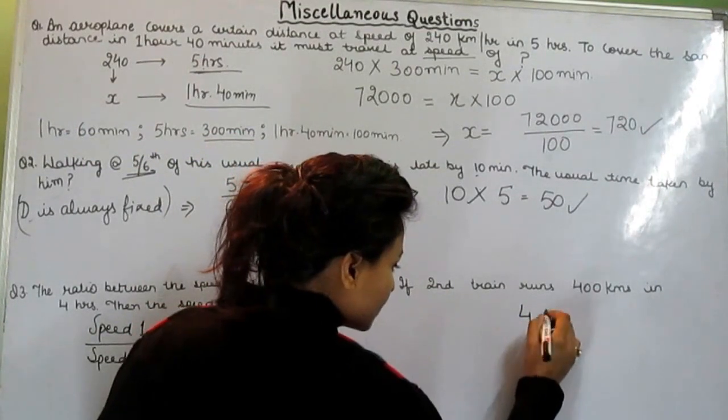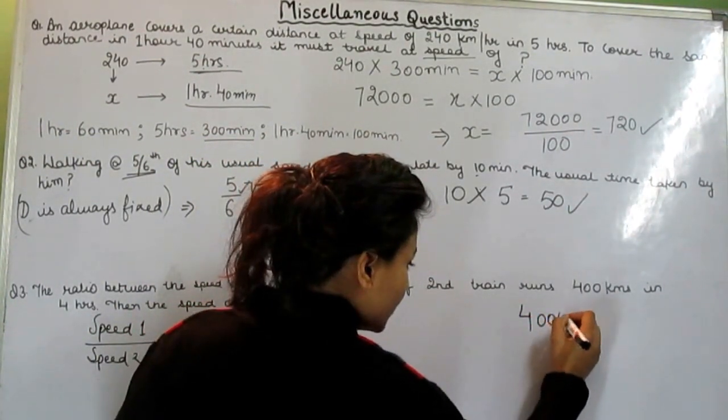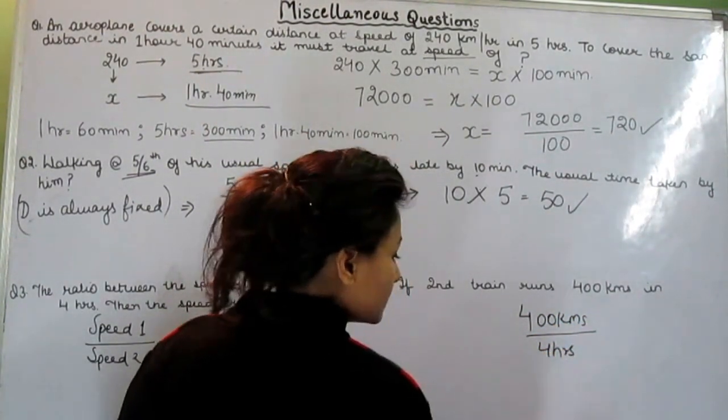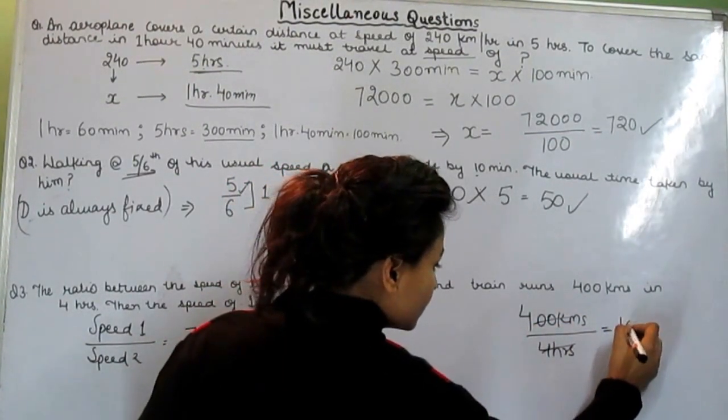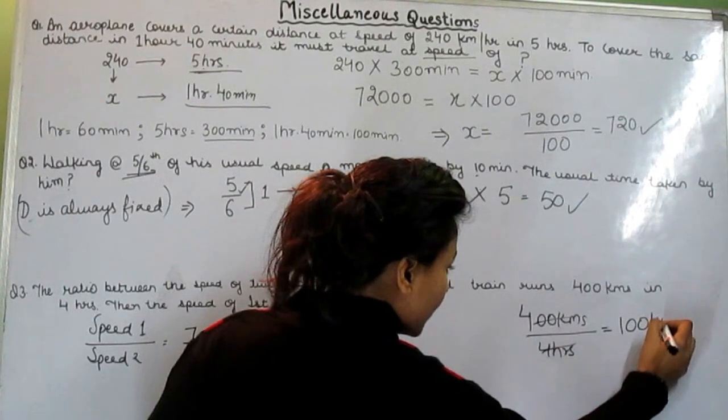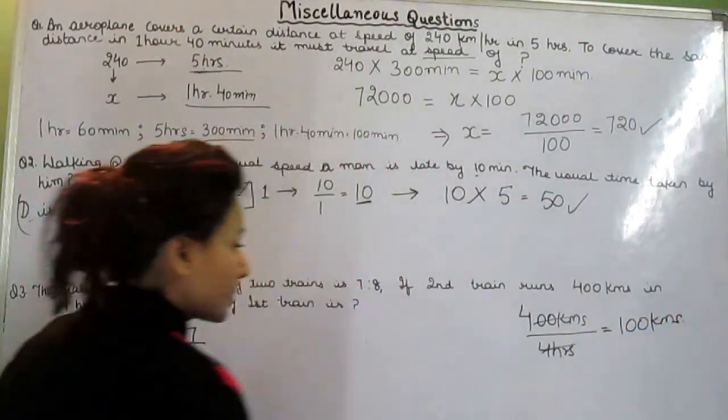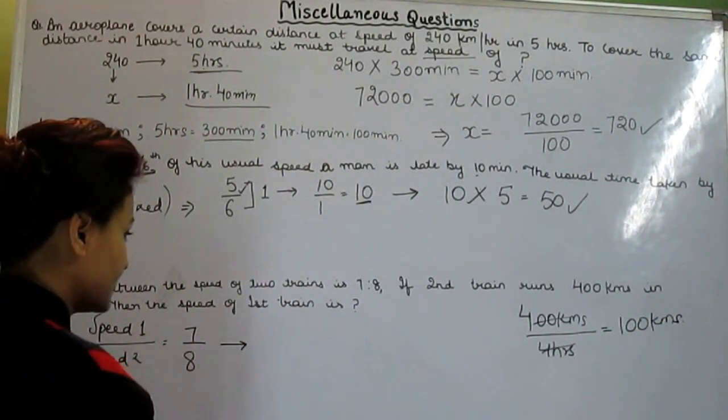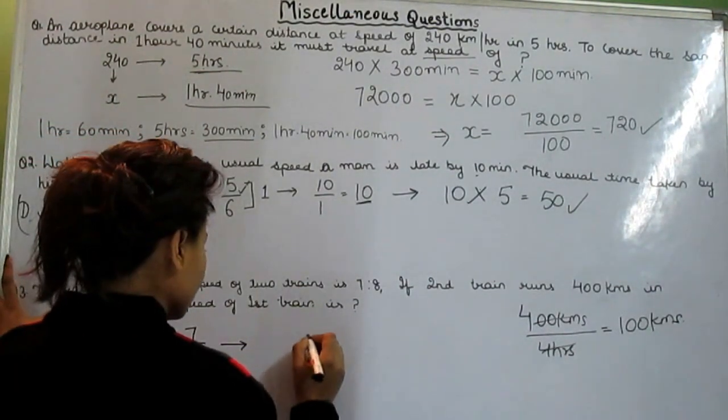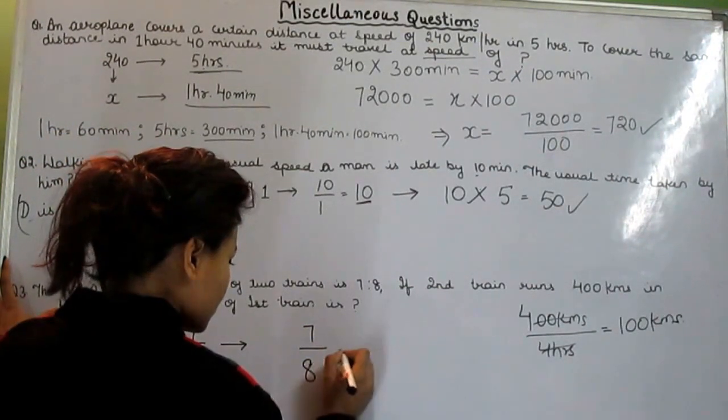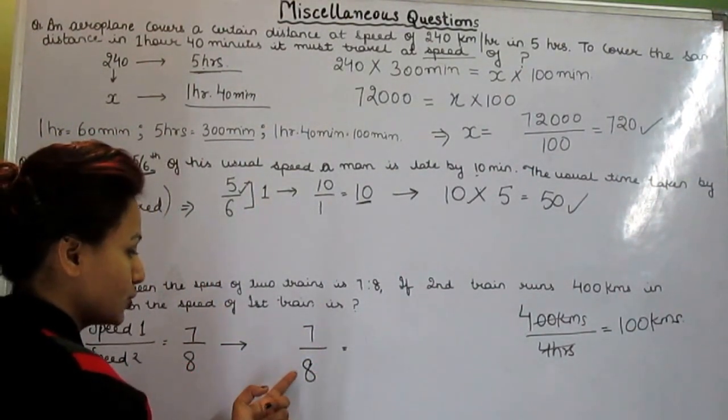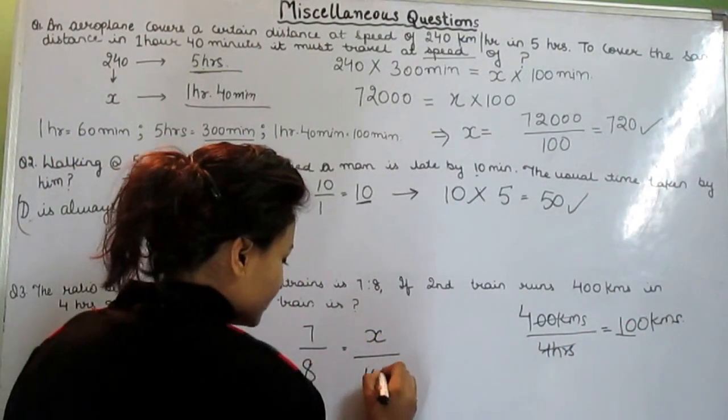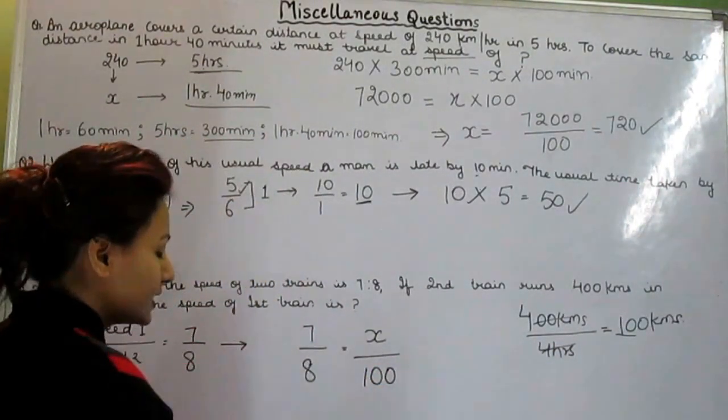If it completes in 4 hours, then in 1 hour it completes 100 km, right? In 1 hour it completes 100 km. So the next step is, this is speed 1, this is speed 2. This we have to find out, and this is given. Second train speed is given. So from here we will get the value of x.